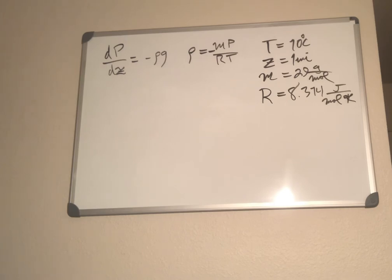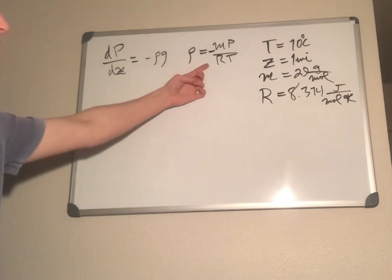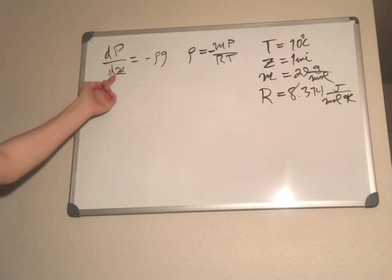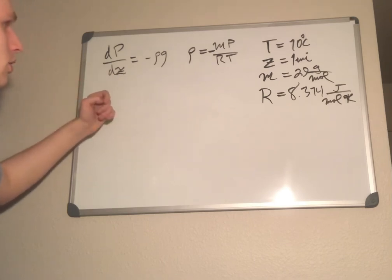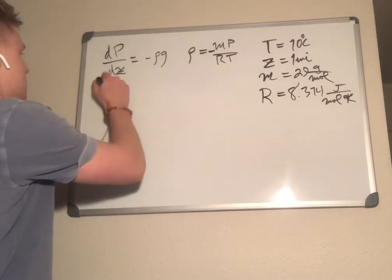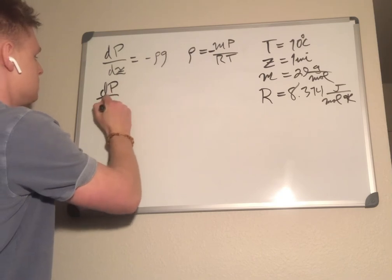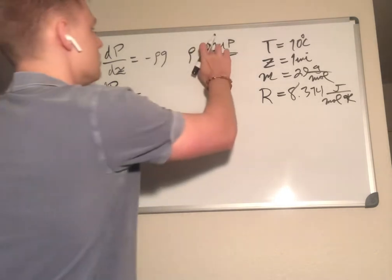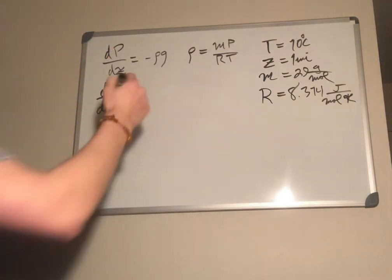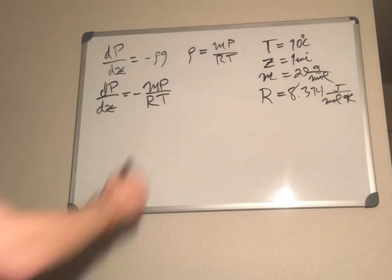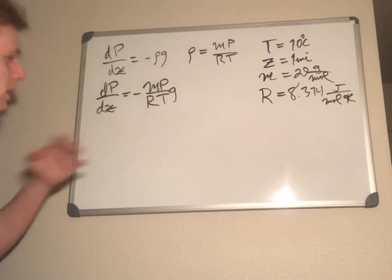Looking at this, I see we have rho equal to that. This has a lot more variables than rho. We know what gravity is, but we need to find a way to isolate this. So I'm going to put dp over dz is equal to negative mp over rt times g.